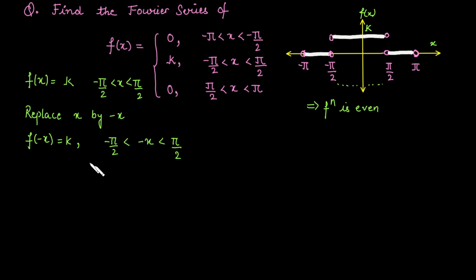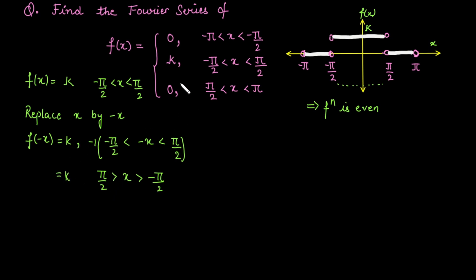Multiplying the inequality by −1 gives minus pi/2 < x < pi/2, so from minus pi by 2 to pi by 2 the function is k — the same as f(x). Since f(−x) = f(x), the function is even.